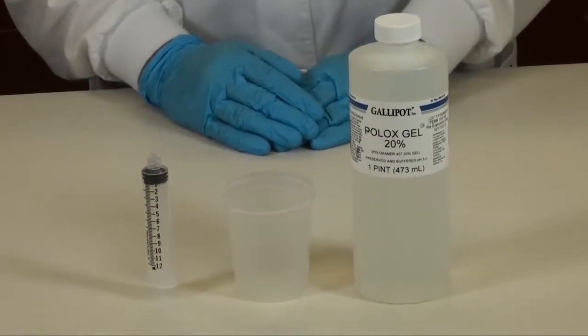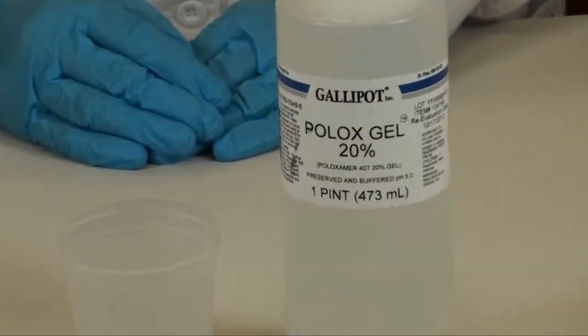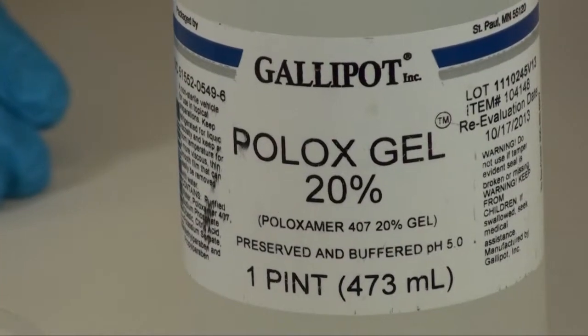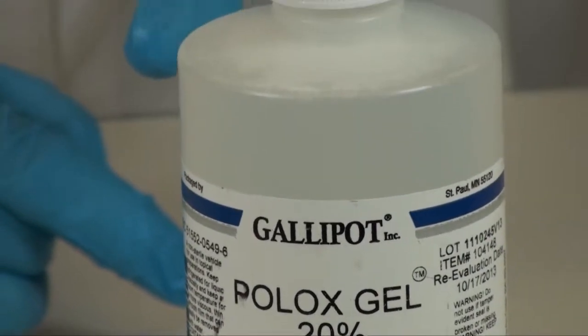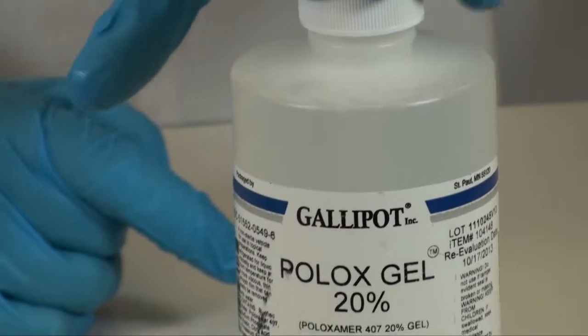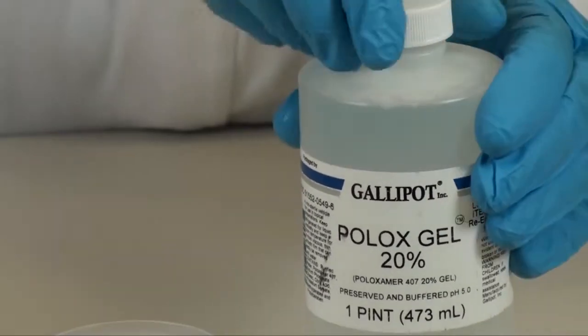In this step we're going to measure the required amount of poloxamer 20% solution. It is stored in the refrigerator. At this temperature it is in solution form. As it warms to room temperature it will turn into a gel.